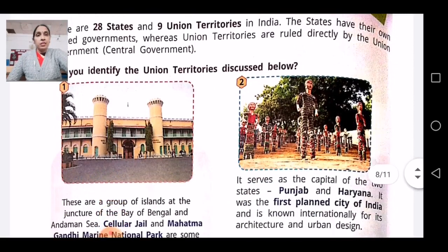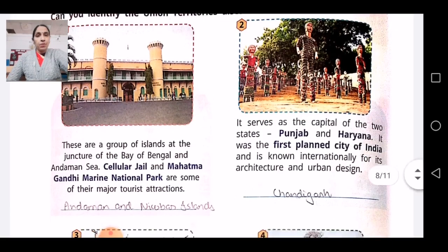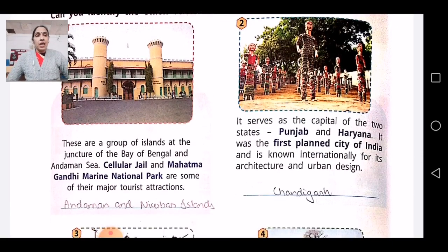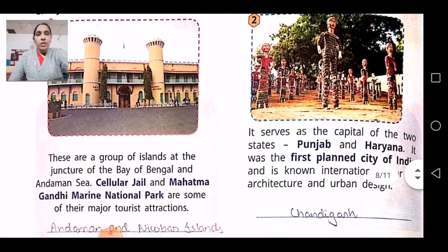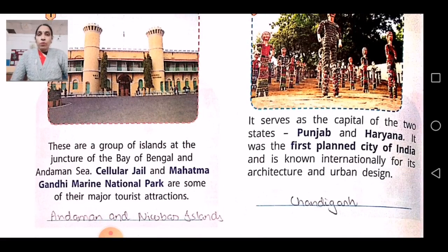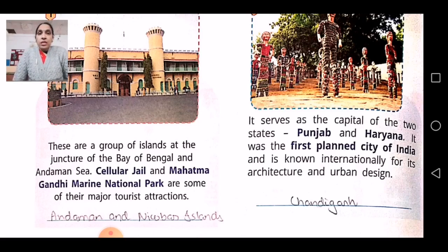Can you identify the Union Territories discussed below? The first one: these are a group of islands at the juncture of the Bay of Bengal and Andaman Sea. Cellular Jail and Mahatma Gandhi Marine National Park are some of their major tourist attractions. That first picture is quite clear — it is Andaman and Nicobar Island. Earlier it was known as Kalapani. Cellular Jail was quite famous, where freedom fighters were kept. Mahatma Gandhi Marine National Park is also quite famous there.